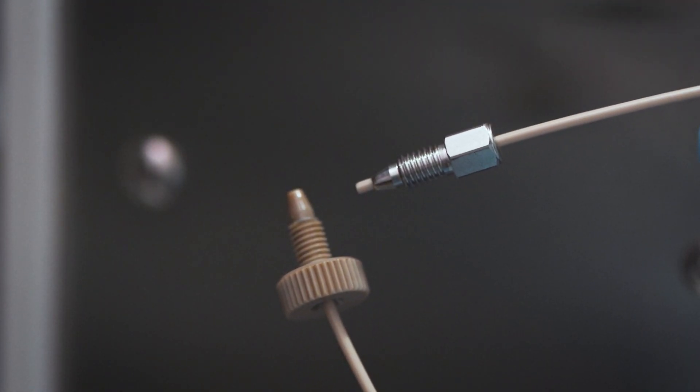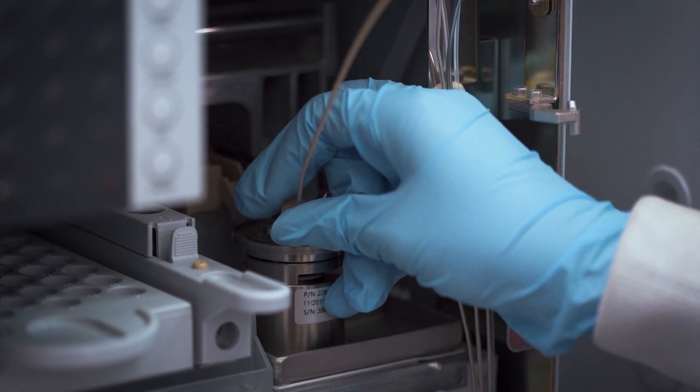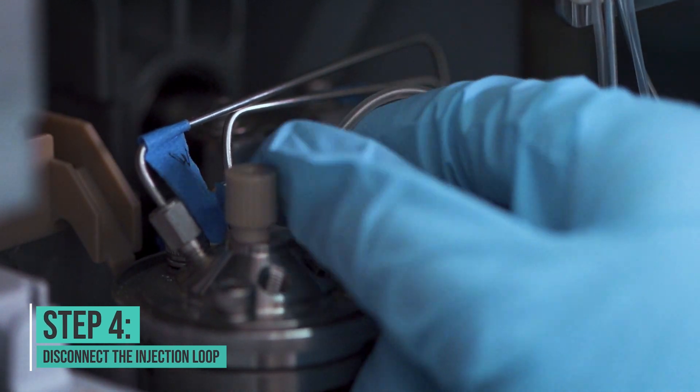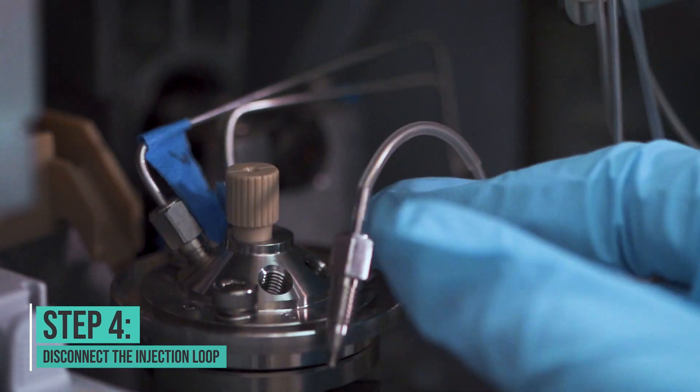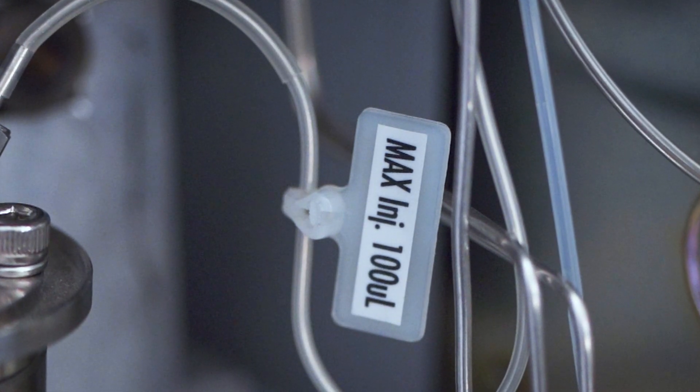Usually when you clog something, the clog is just at the front. The clog usually isn't in the middle of a line or column, so when you flip something around you can normally blow the clog out the back. If that line is still clogged, same idea: disconnect the injection loop and see if the pressure goes down.